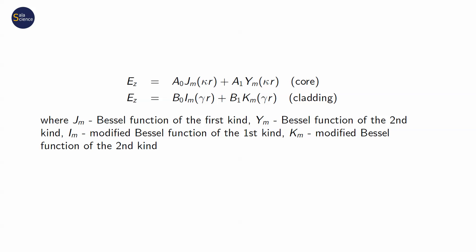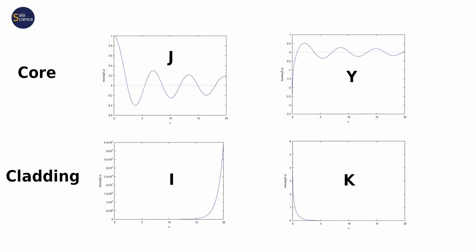Let's draw these functions versus radial coordinates. We see that function Y, a Bessel function of the second kind, diverges to minus infinity when its parameter is equal to zero. It means that this function cannot be a solution in the core. We do not want to have an infinite electric field.